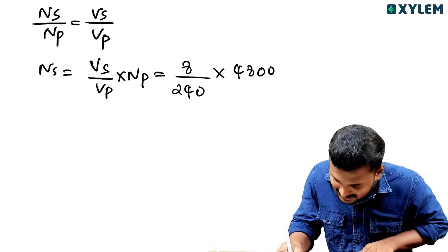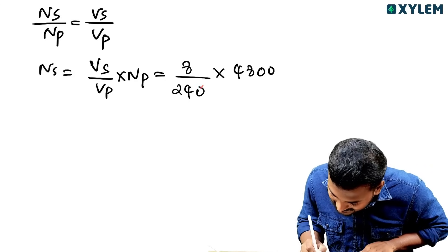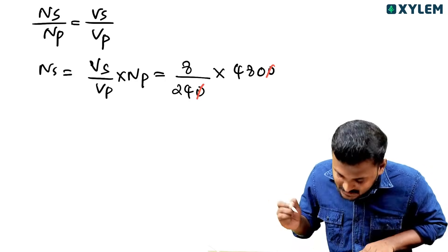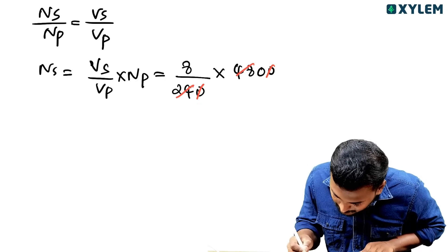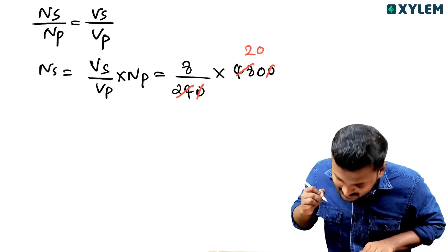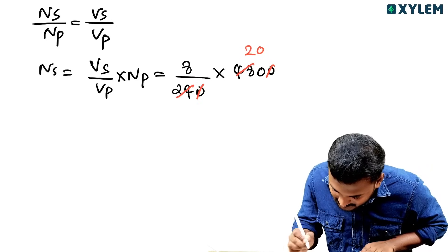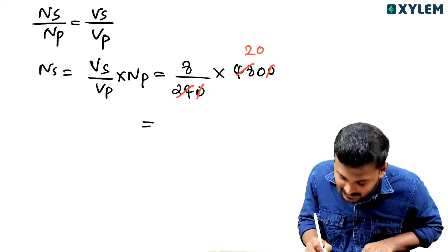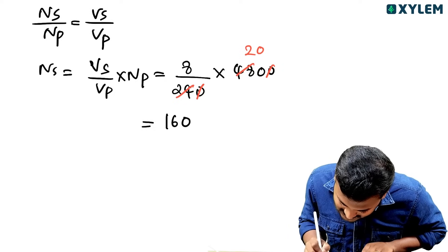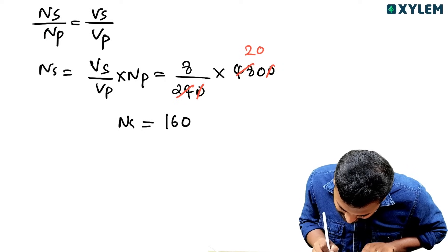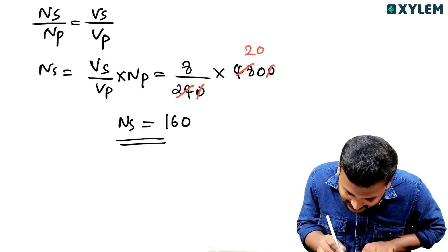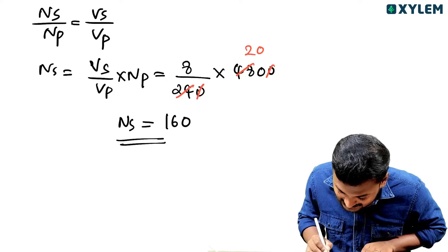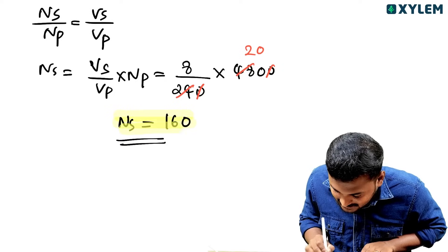Using the transformer formula, Ns divided by Np equals Vs divided by Vp. Solving the calculation gives the number of turns in the secondary as approximately 120.